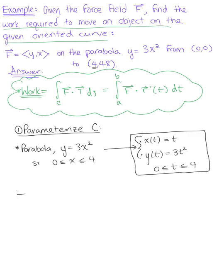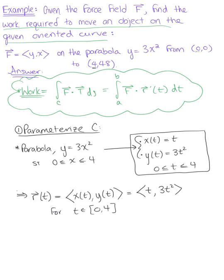We can rewrite this in vector-valued function form. Vector r(t) is defined as the vector <t, 3t squared>. And again, this is for t on the closed interval from 0 to 4.